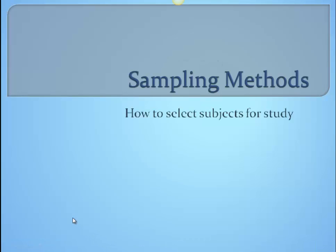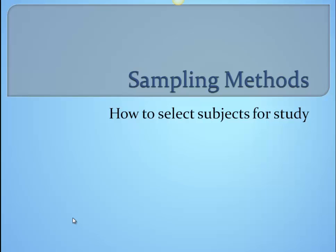Hey everybody, in this video we're going to talk about sampling methods and how we select subjects for our experiment. This is a very important section, especially for AP students. They want you to know how sampling is done and how to do it correctly so we can trust our results and the results are valid. You should have your notes out and be taking notes. You want to be able to distinguish between the different sampling methods and their strengths and weaknesses.